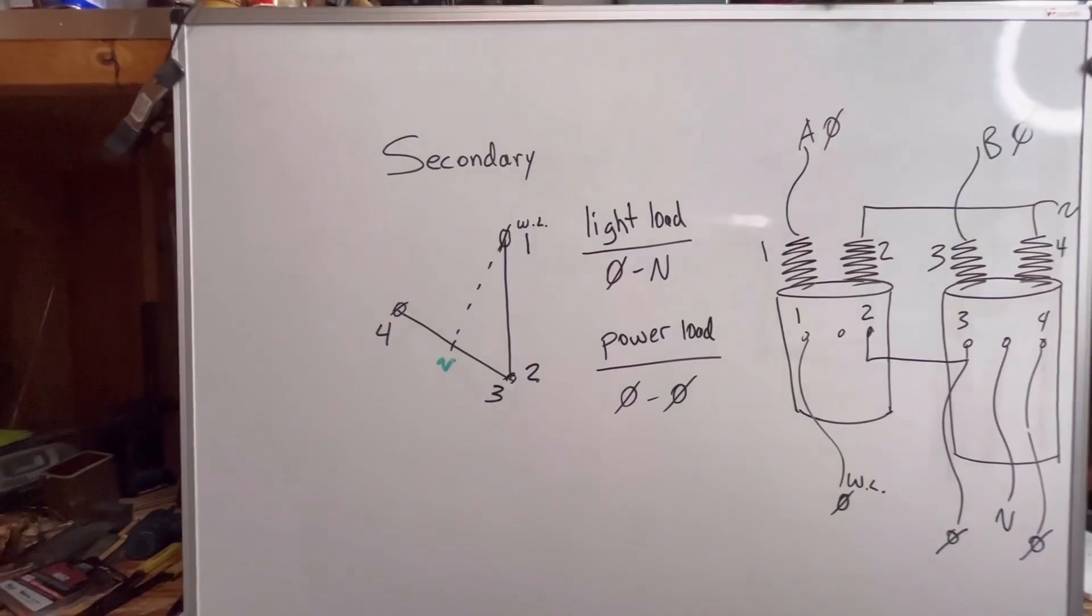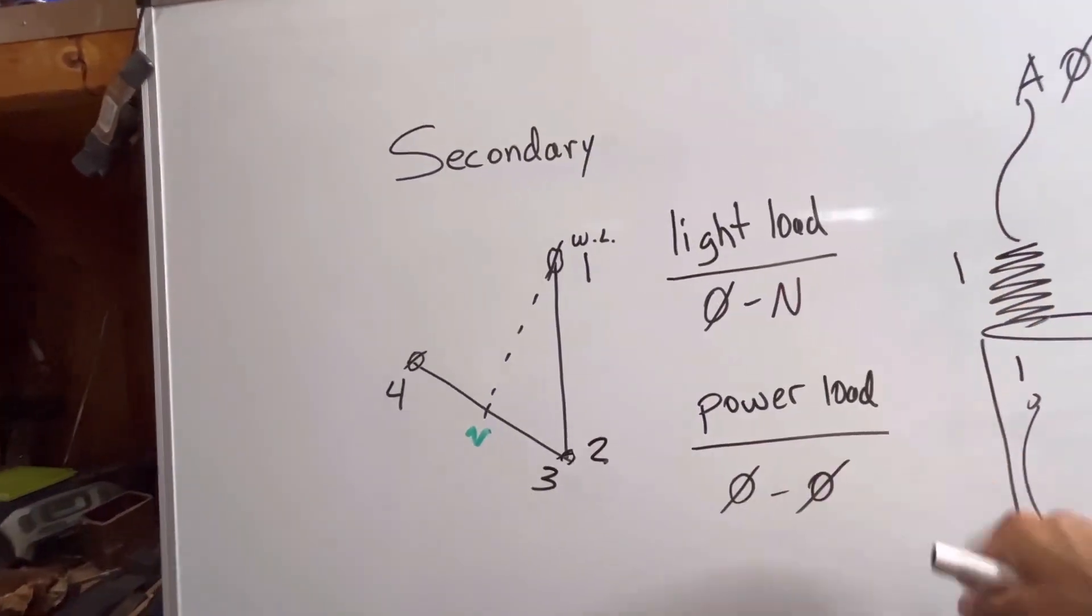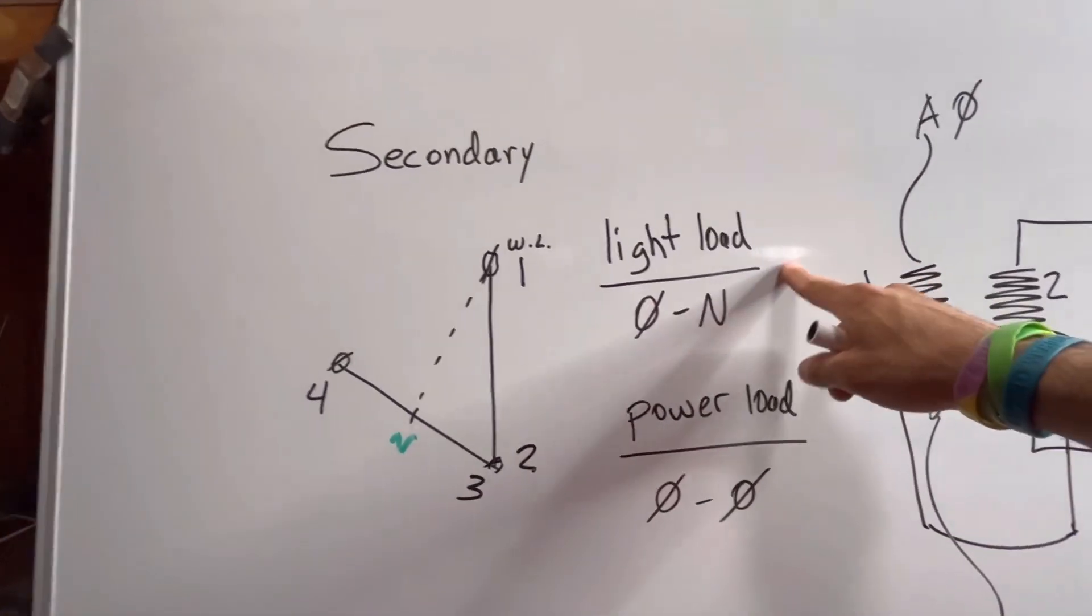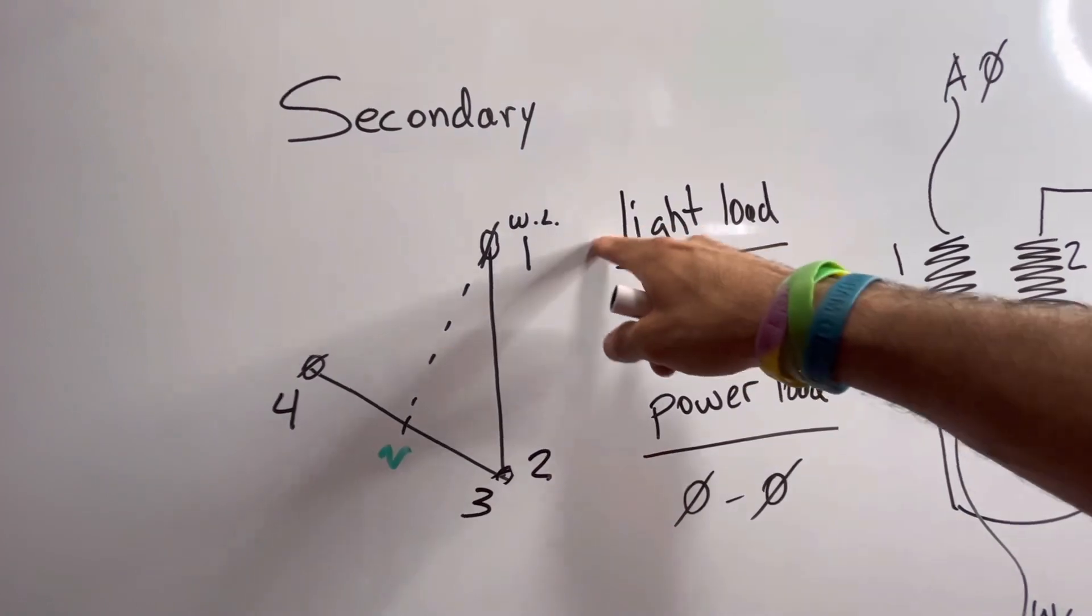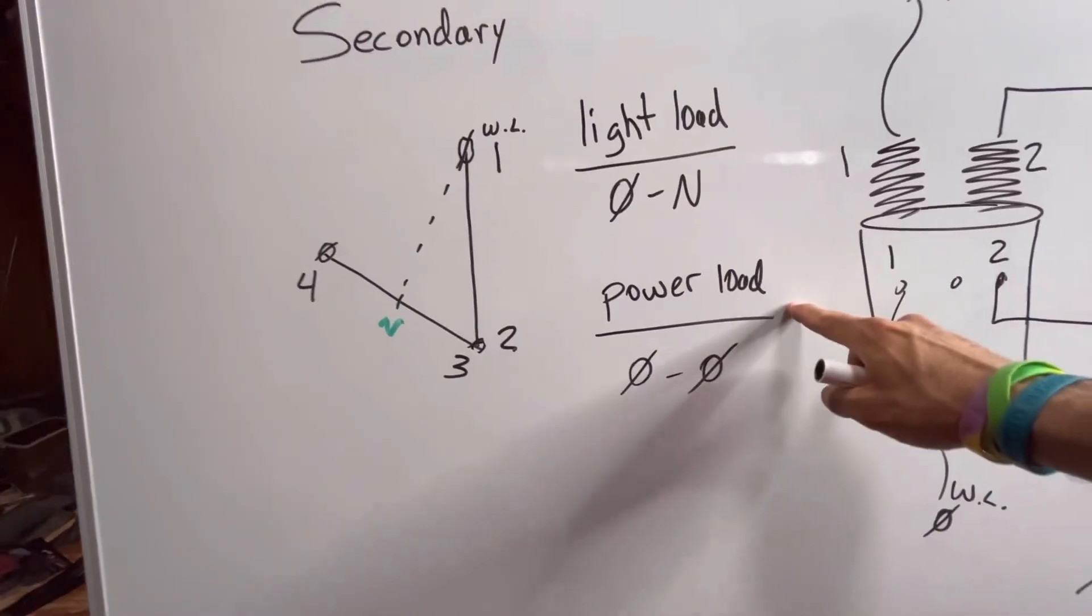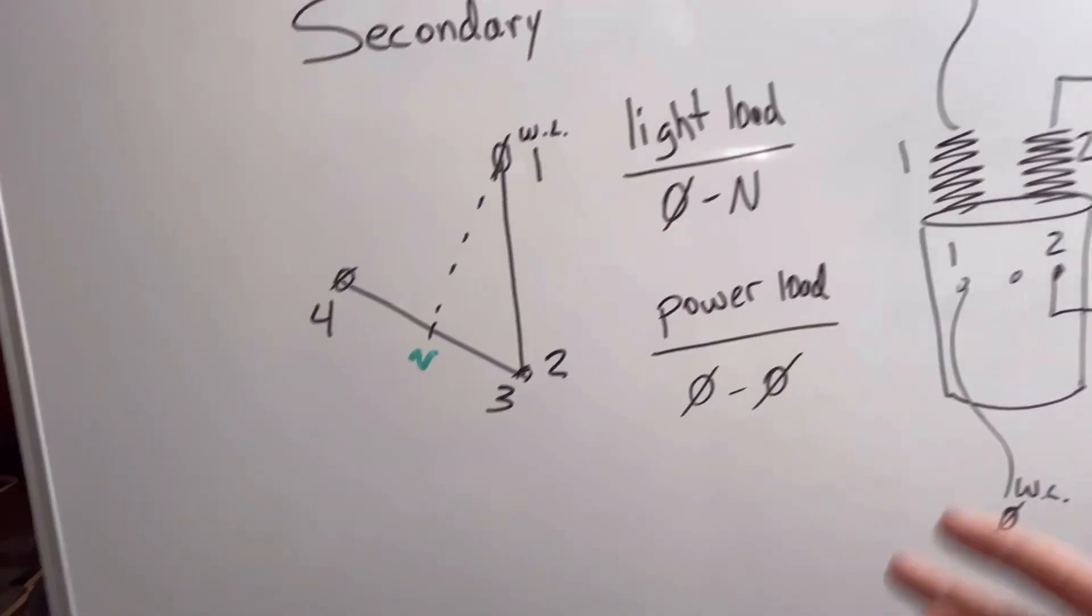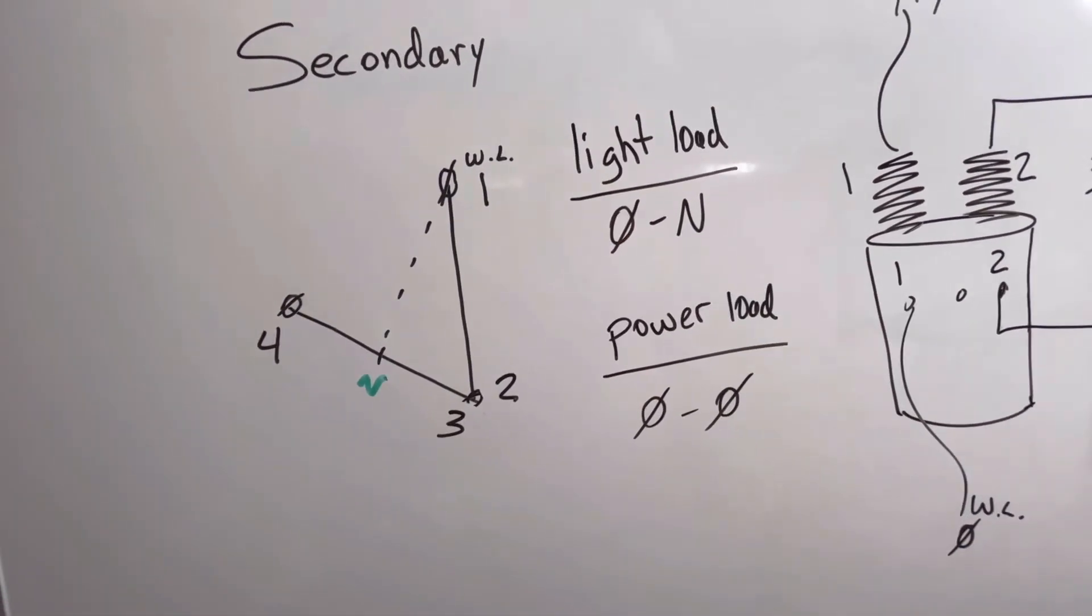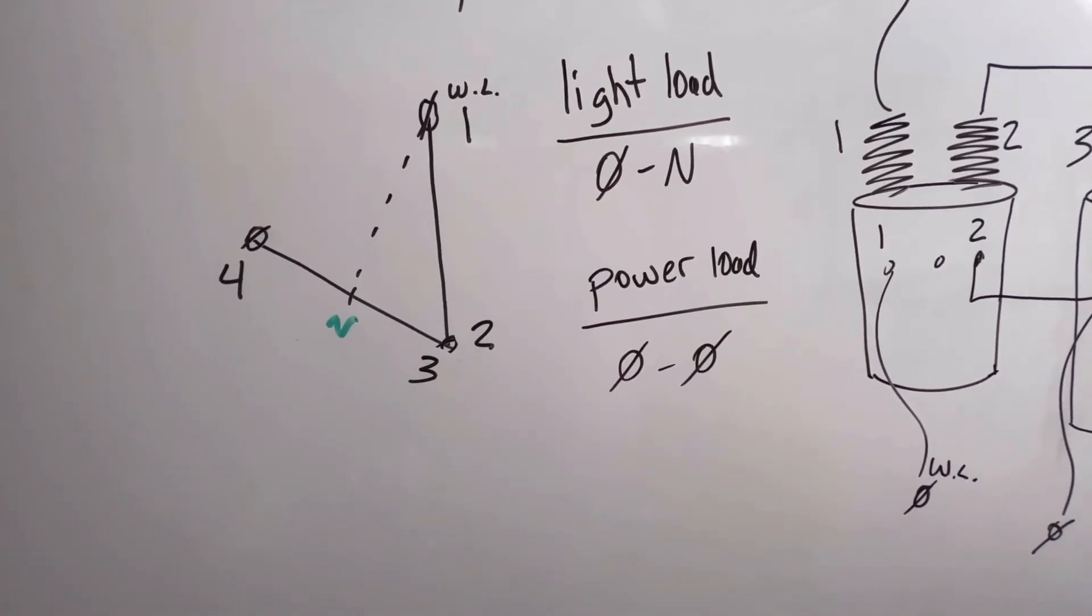So the terms light and power are just references to what type of load our customer has. The lighting load was called the lighting load because it was typically the potential that ran all the lights in the building, or the phase-to-neutral load. The power load is a reference to the phase-to-phase load. So your three-phase motors, your 240 appliances, all that kind of stuff, air conditioners, everything. That's your power load.